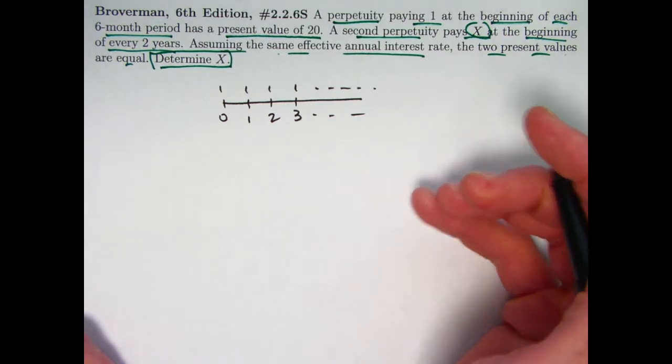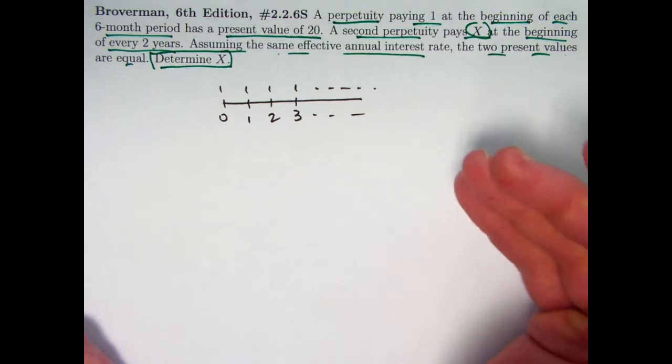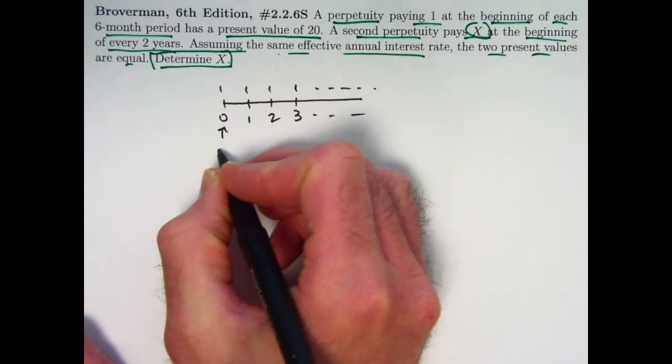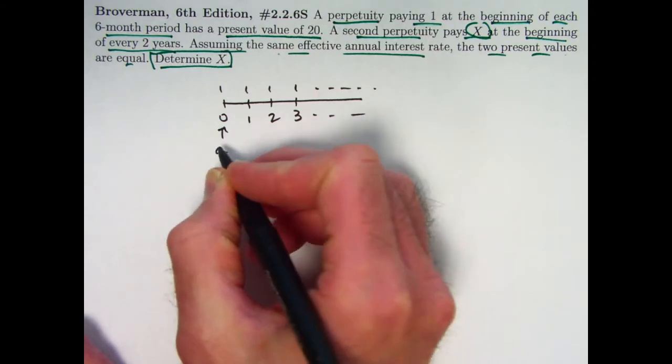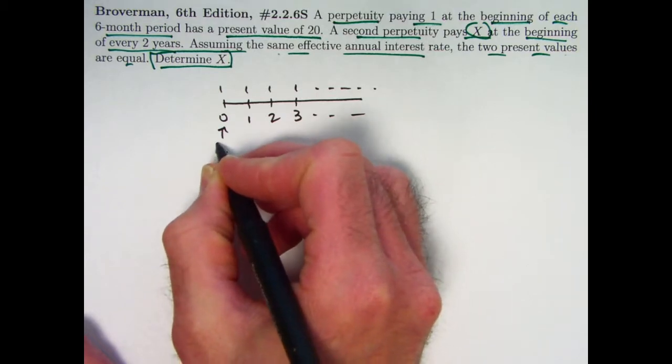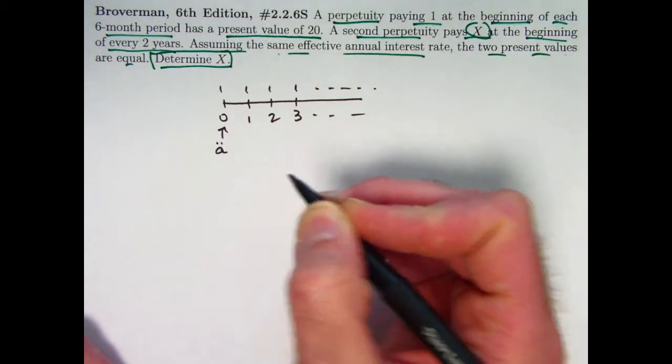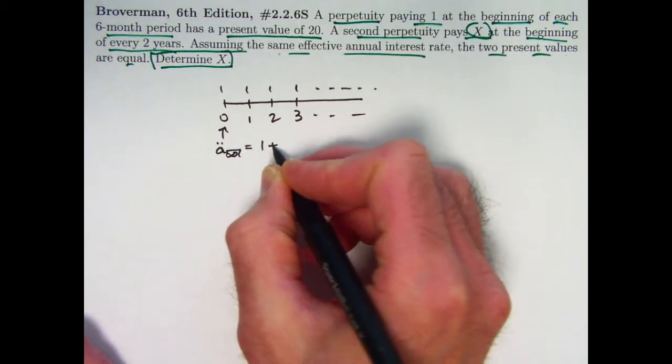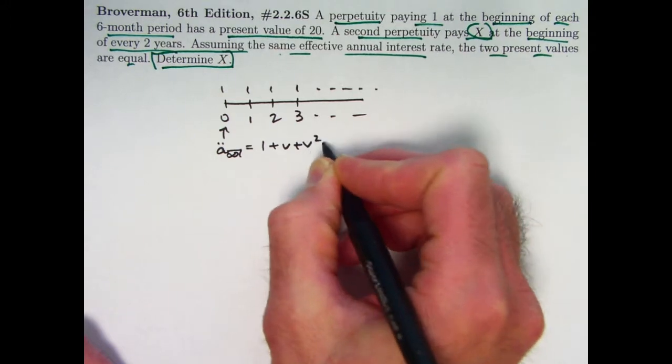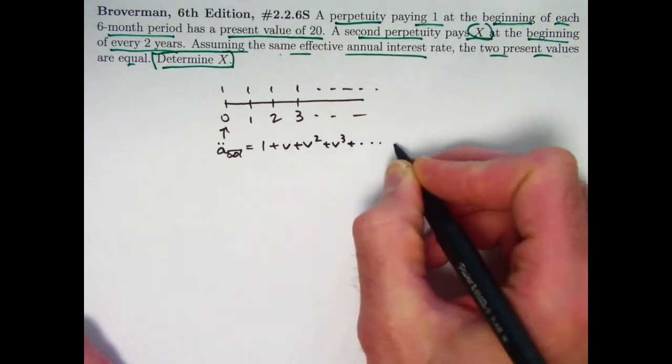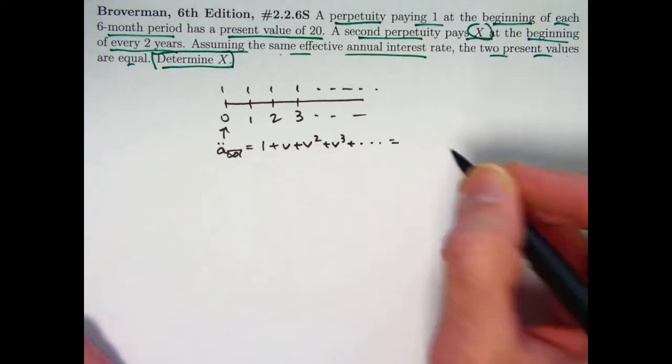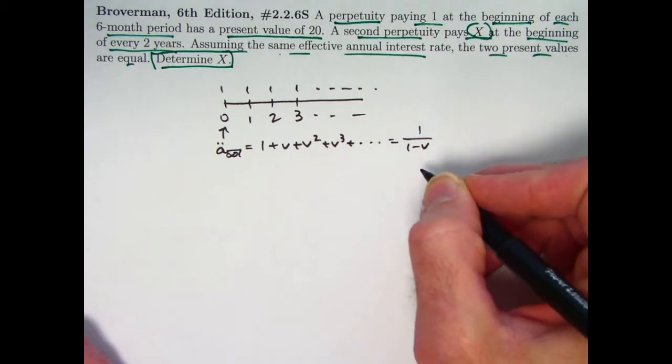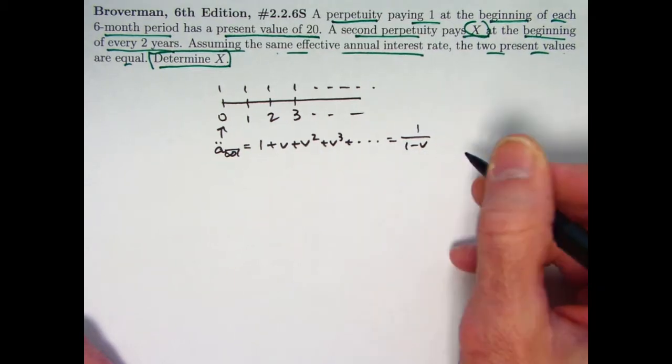So thinking of this as a geometric series, first of all what would the symbol be for it? It is a present value so we use an a, it is an annuity due so we use a double dot, and it goes on forever so we use an infinity here. As a series it's 1 + v + v² + v³, etc. That will converge because the absolute value of v will be less than 1, to 1/(1-v). And recall that if v is the present value discount factor, then 1 - v is the present value discount rate which we call d.